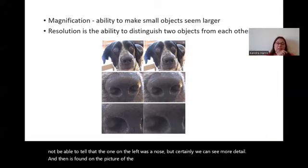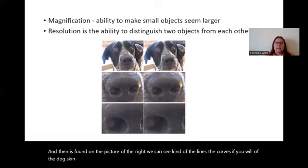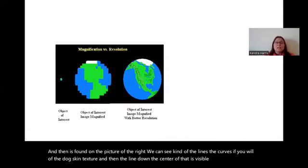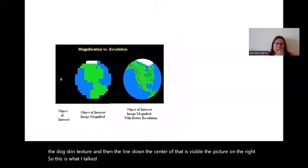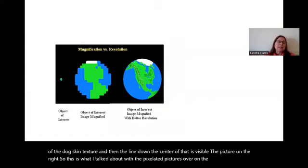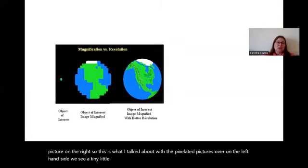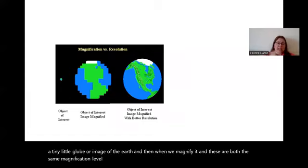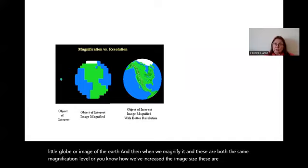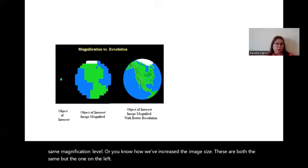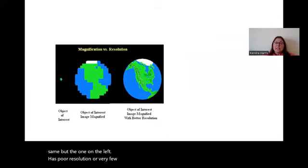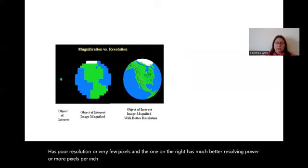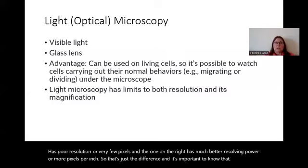On the final image, the resolving power on the left is really good while the resolving power on the right is actually very poor — we can't really even tell that's a nose. On the left, we can see the lines, the curves of the dog's skin texture and the line down the center, none of which is visible on the right. Over on the left-hand side we see a tiny globe of the earth, and when we magnify it, the one on the left has poor resolution — very few pixels — while the one on the right has much better resolving power.